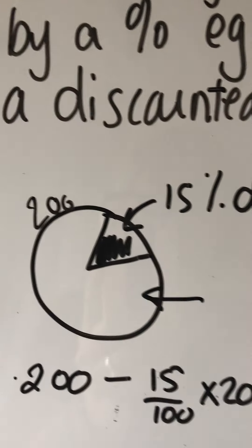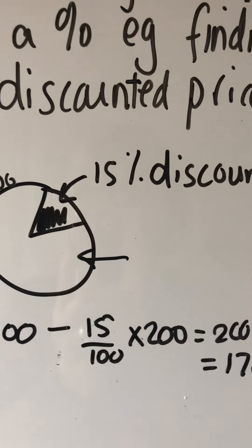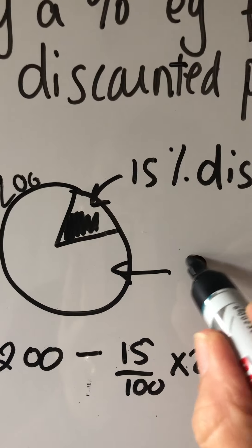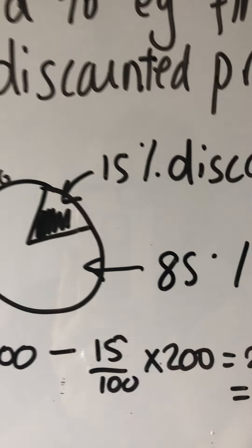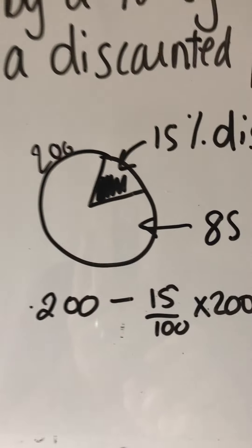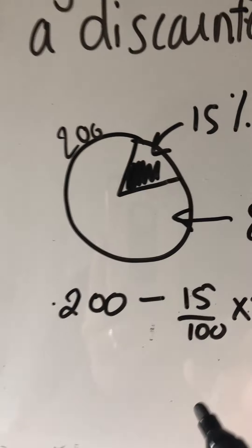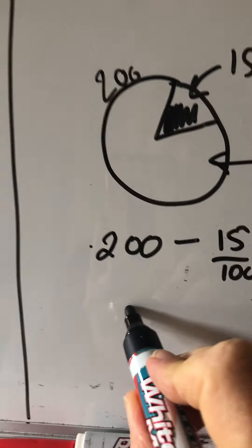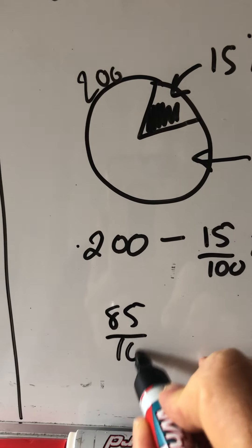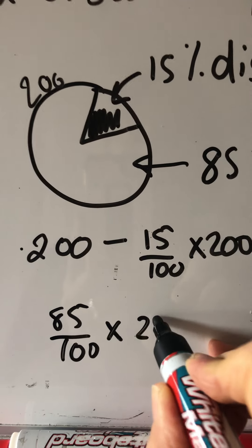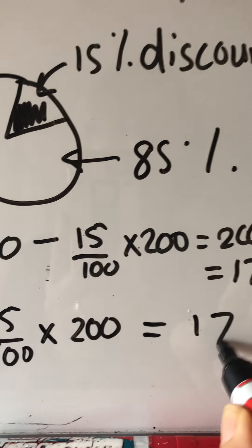The part you are paying is 100 minus 15, in other words 85%. So another way, and a faster way actually to do this, is simply to find 85% of 200 Rand, and you'll get 170.